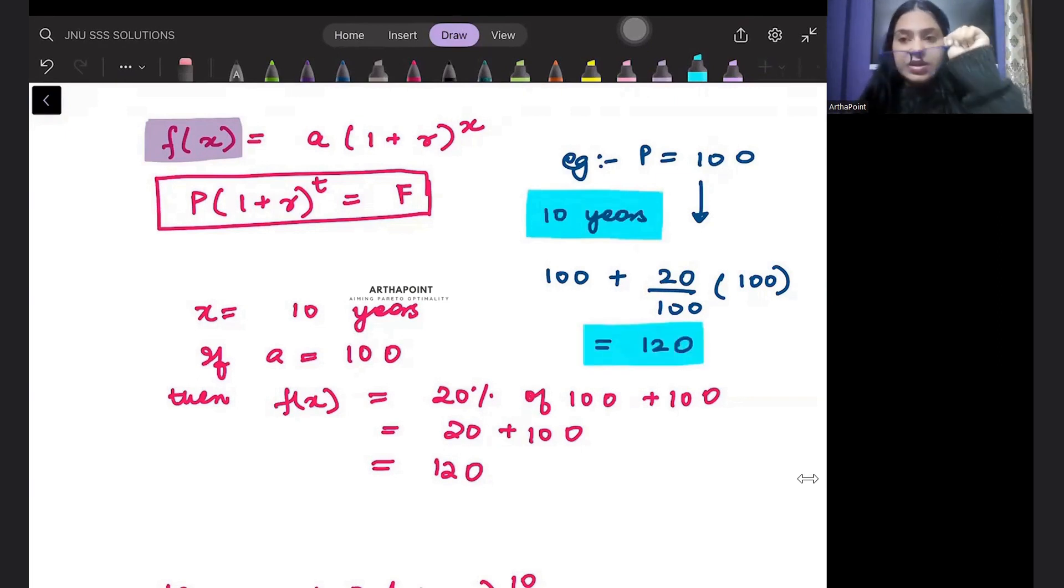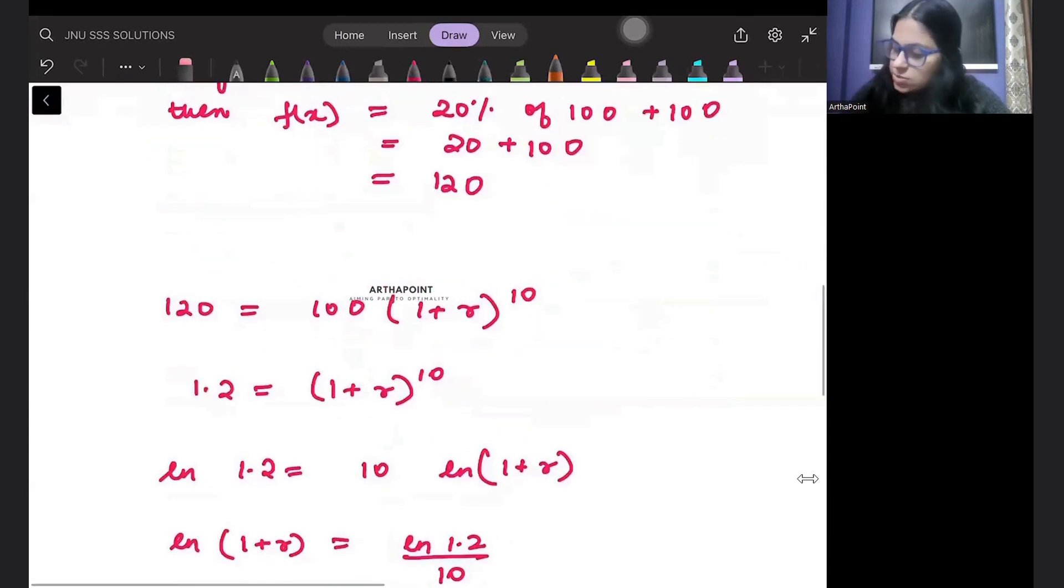The new amount that you will be having will become 120. After 10 years, the money that you will be having will be 120. This is what I have written here, that after 10 years the money will be 120.